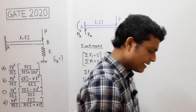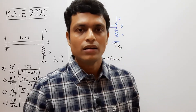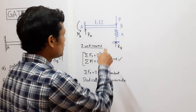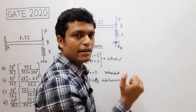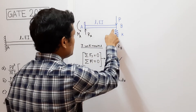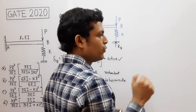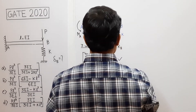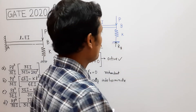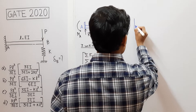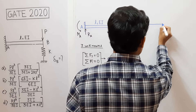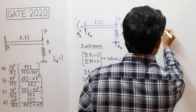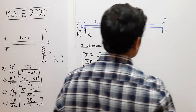Since two equations of statics cannot solve three unknowns, we will apply one boundary condition to solve for the extra unknown. The boundary condition here is that the spring is rigidly attached to the cantilever beam, so the deflection of the beam at point B will be equal to the deflection of the spring. To apply this, let us separate the beam and spring and draw their free body diagrams.